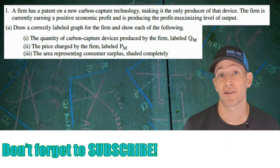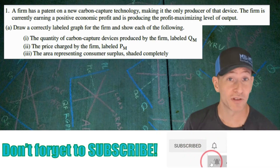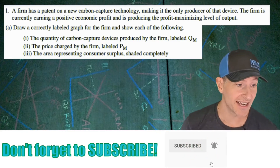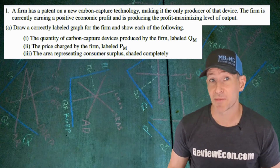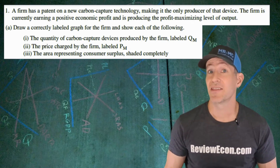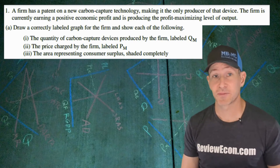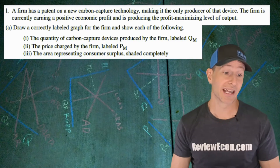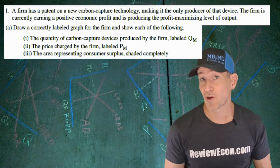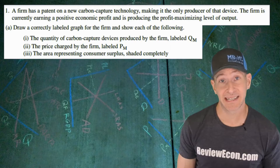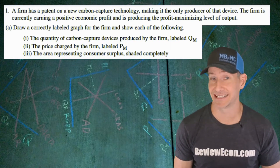For this question, we're starting off with a firm that has some carbon capture technology. They are the only producer of this device, which means they are going to be a monopoly, and this firm is earning an economic profit. They are also producing the profit maximizing quantity of output. We're going to draw a graph for this monopoly, label the profit maximizing quantity as QM, the price the firm charges as PM, and shade the area of consumer surplus completely.